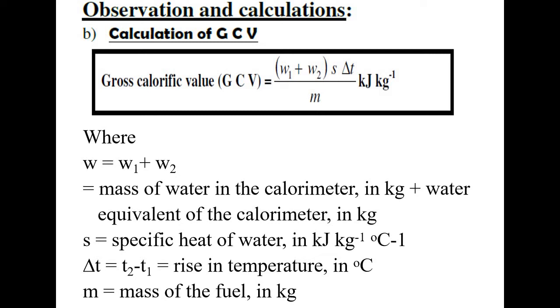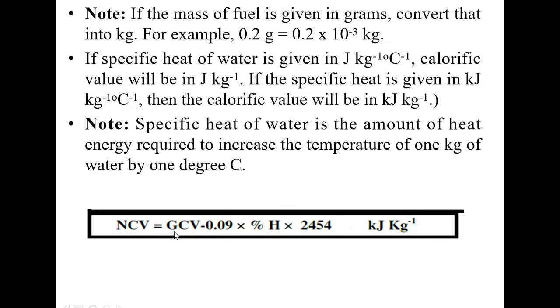Gross calorific value is expressed in kilojoules per kg. And next we have NCV. NCV equals GCV minus 0.09 times percent hydrogen times 2454 kilojoules per kg. These are the two formulae we are supposed to know in order to solve the problems.